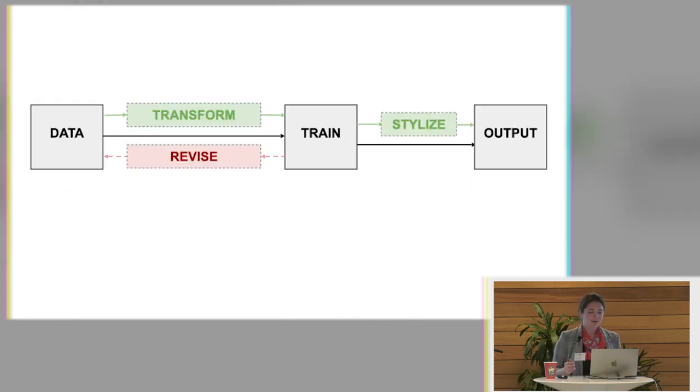So to simplify, data, train, output. And then along the way, we might do some transformation, we might do some revision, and we might do some stylization. So to kind of keep us grounded throughout this talk, you're going to see this diagram up in the corner. And I'm just going to highlight where we are in the talk.